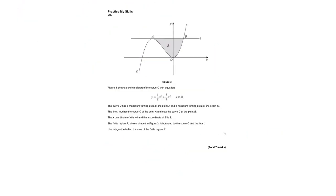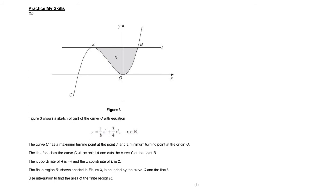Question 3. Figure 3 shows a sketch of part of a curve with this equation. The curve C has a maximum turning point at point A and a minimum turning point at the origin. The line L touches the curve C at point A. The x-coordinate of A is minus 4 and the x-coordinate of B is 2. We can substitute either value in to find what y is — when I substitute in, I get y equals 4. So my line is y equals 4.